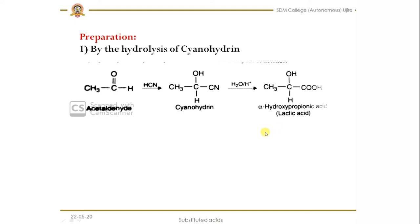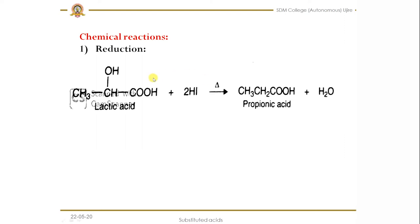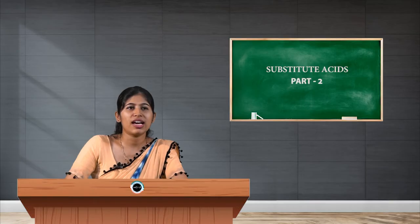As a result we get lactic acid. This is one simple method for the preparation. Next we will see the chemical reactions of lactic acid. First one is reduction — when you reduce lactic acid in the presence of hydrogen iodide at higher temperature, removal of a water molecule takes place, specifically the hydroxy group is removed, and as a result we get propanoic acid.